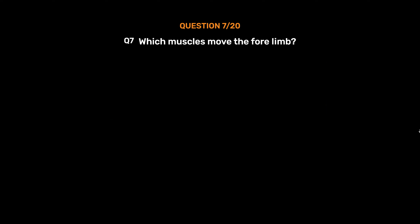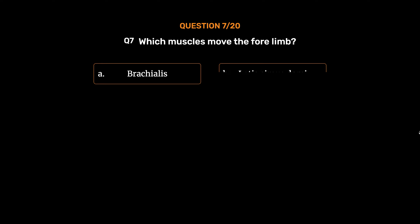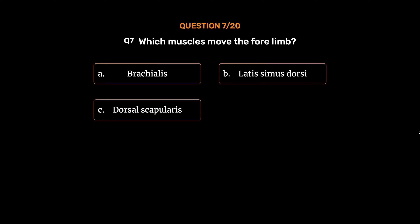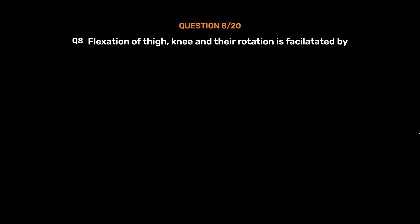Question No. 7. Which muscles move the forelimb? Option A. Brachialis, Option B. Latissimus dorsi, Option C. Dorsal scapularis, Option D. Triceps brachii. The correct answer is Option A, Brachialis.